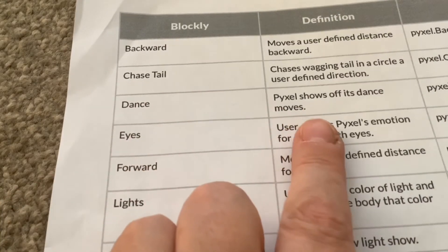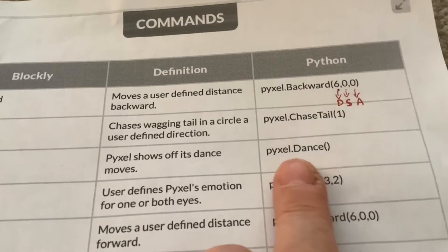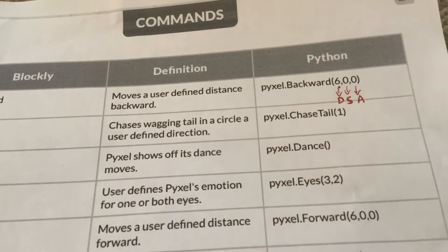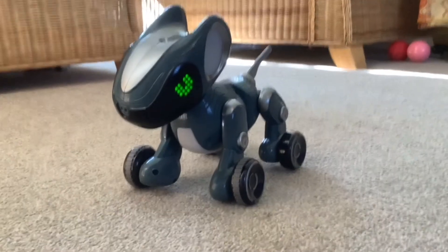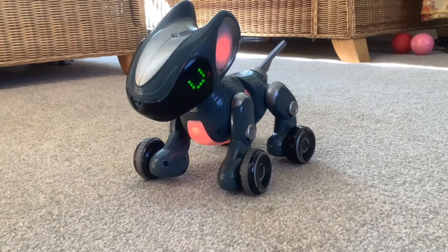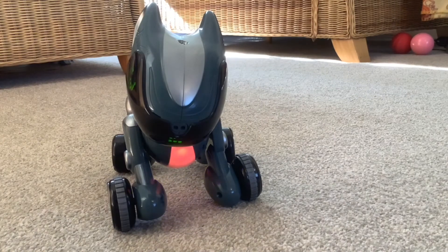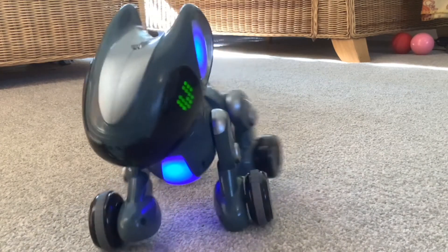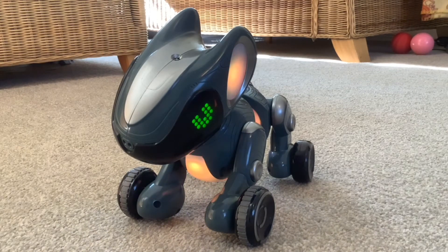The next command is dance — Pixel shows off its dance moves. The Python code is just 'pixel.dance()' with empty brackets, because you always have to include brackets even if you're not choosing a variable such as color or direction. I'll press number three on the Code Activator.